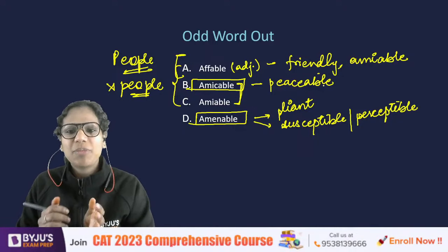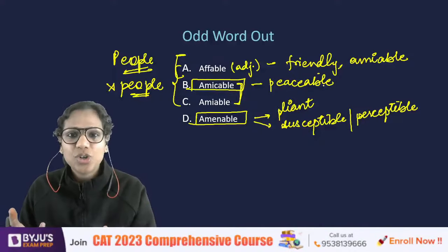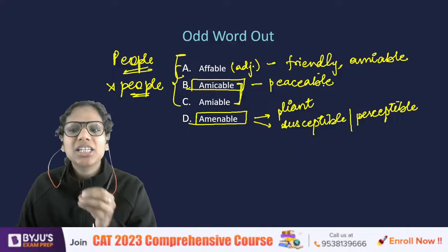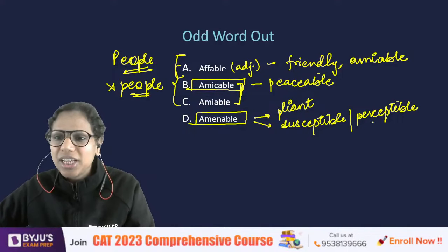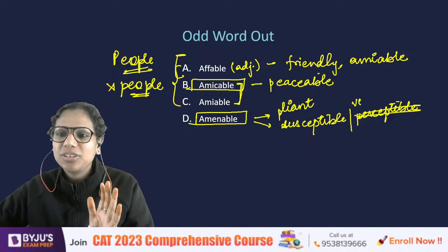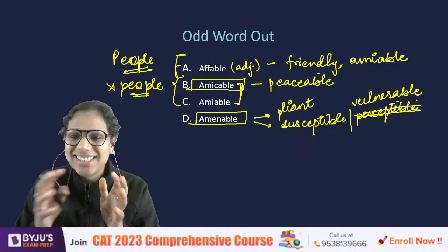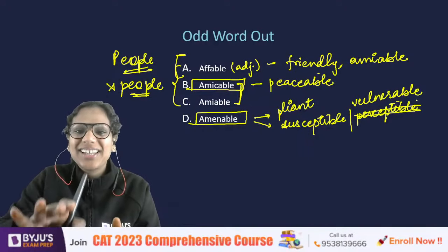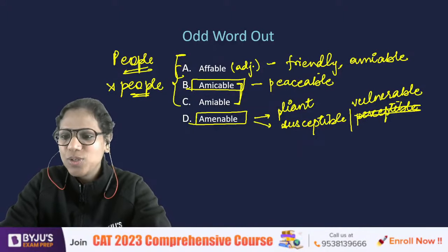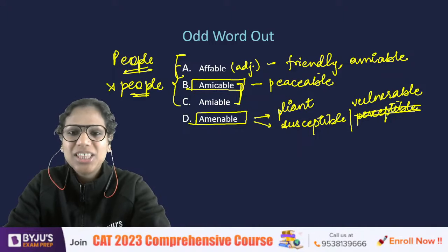Now you'll remember when to use amicable and when to use amiable — these are common confusables that can appear in your exam as fill-in-the-blanks. One is for people, one is for situations. Amenable, on the other hand, means pliant and vulnerable — not perceptible as I mistakenly wrote. So with this understanding, let's move ahead.